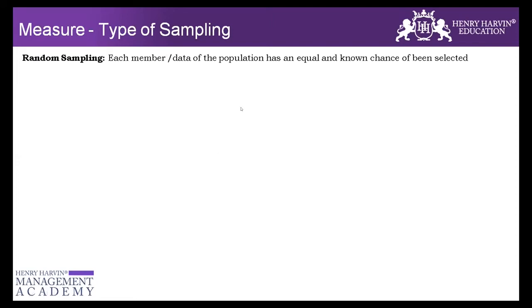First, let's talk about types of sampling. The first type is called random sampling. In random sampling, we don't apply any systematic approach — we pick any sort of number that comes our way; it could be the first, third, fifth, seventh, whatever we want. But before we get into the types of sampling, I want to ask you a question.